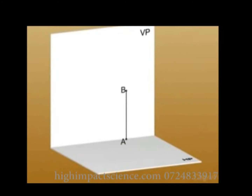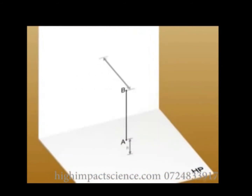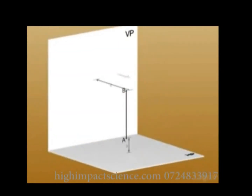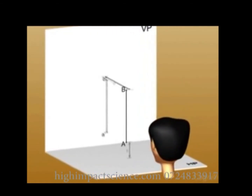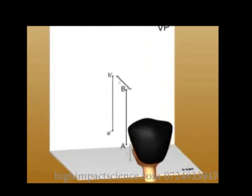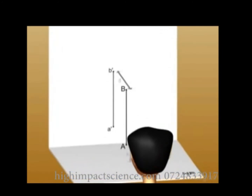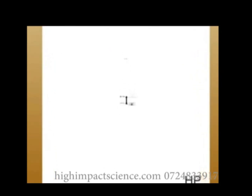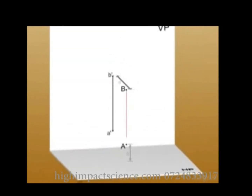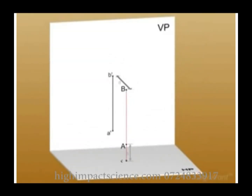Consider a straight line AB perpendicular to HP and parallel to VP, where point A is H units above HP, and point B is D units in front of VP. If light is shown directly in front of the line, you can observe the shadow of the line as A'B' on the plane VP. This is called the projection of the line AB. If you look straight down at point B, it appears to hide point A, so the projection of point B passes through A to meet HP at point C, which is the top view.